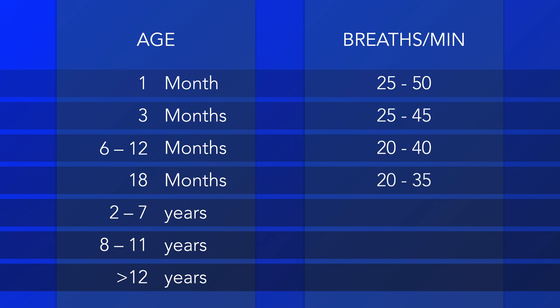The respiratory rate gradually decreases to about 20 to 35 breaths per minute at 18 months of life, then to about 12 to 24 breaths per minute at 12 years of age.